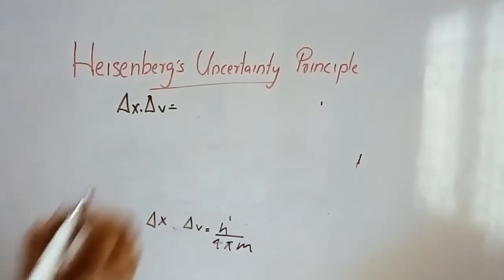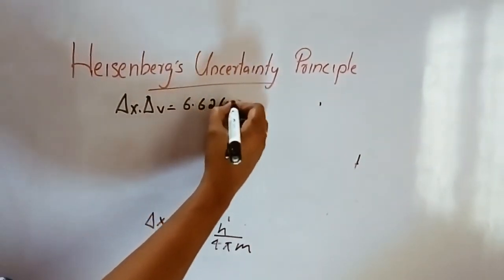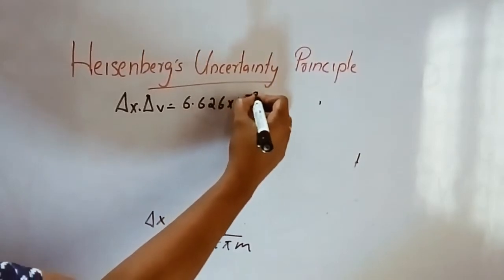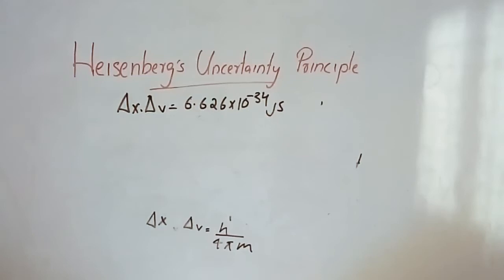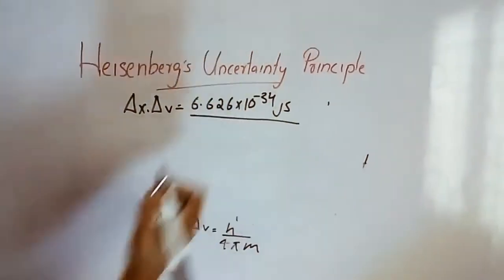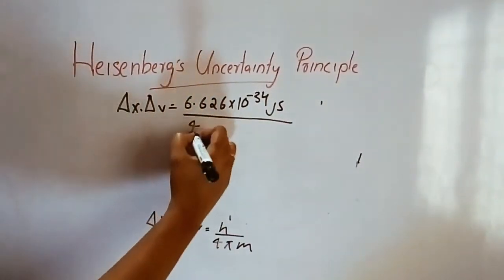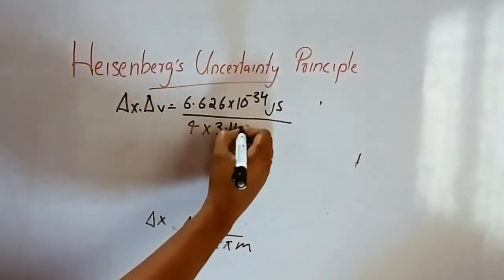The Planck constant h is 6.626 into 10 raise to minus 34 joule second. This value is very important to remember. We divide by 4 pi, where pi is 3.14.